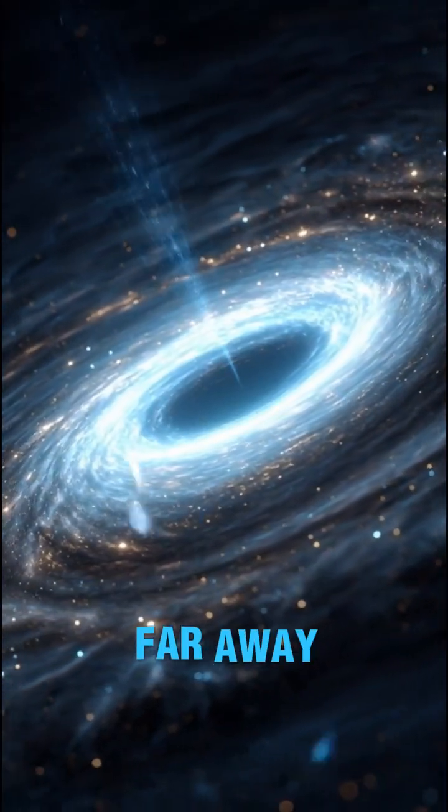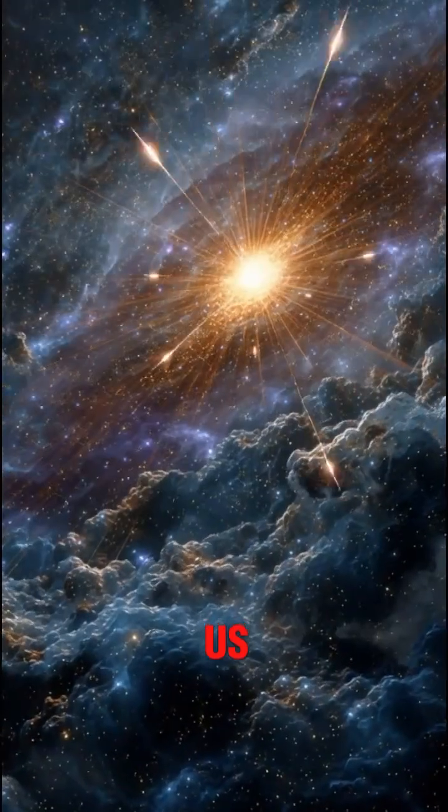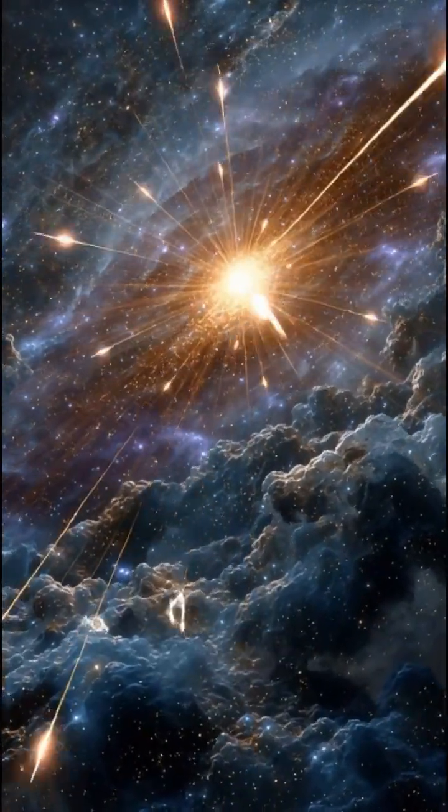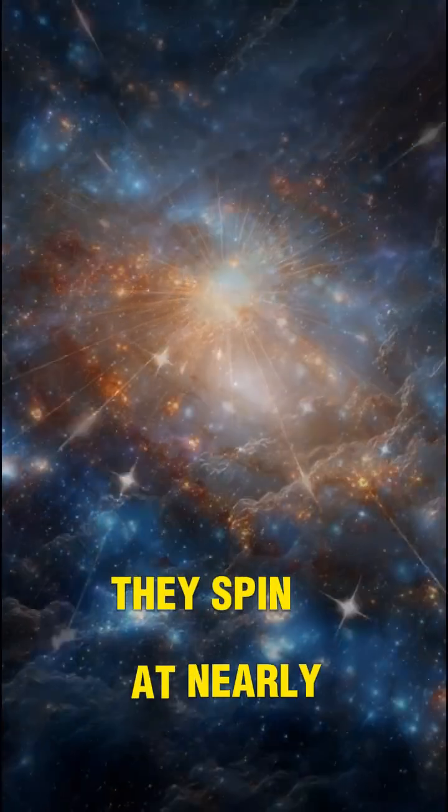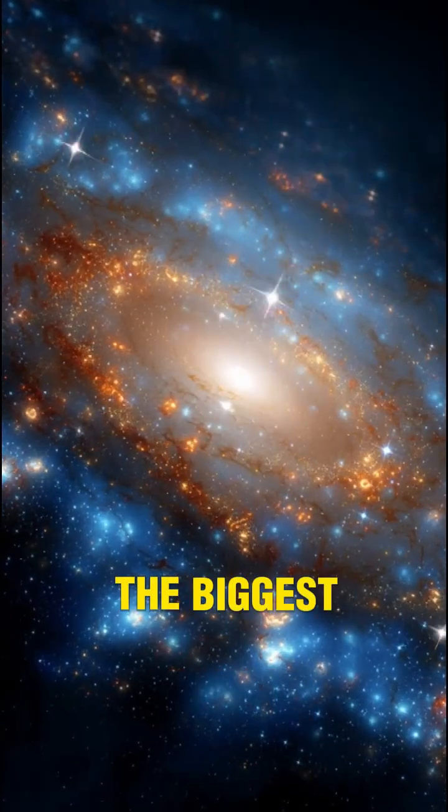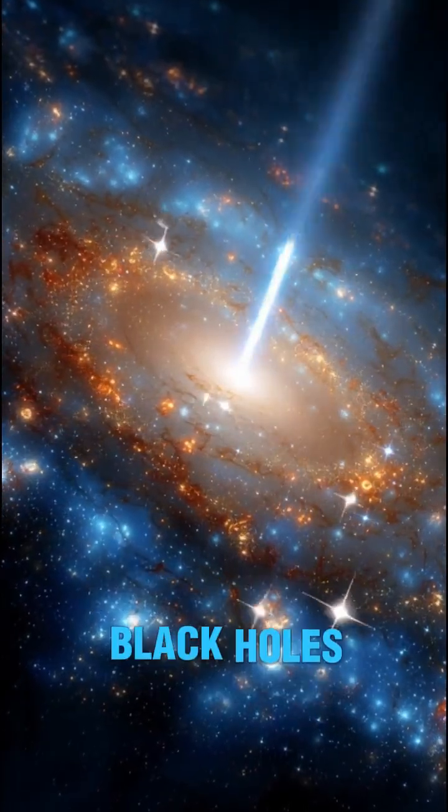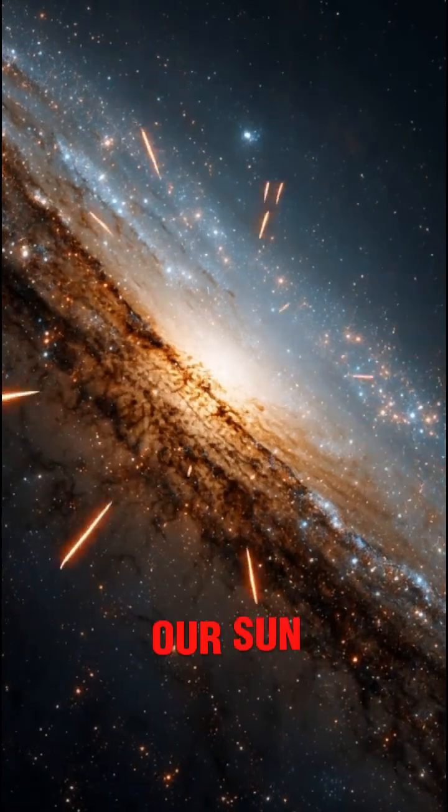Some quasars are so far away that their light began traveling toward us before the Earth even existed. The fastest ones spin at nearly half the speed of light. The biggest contain black holes with masses 10 to 100 billion times larger than our sun.